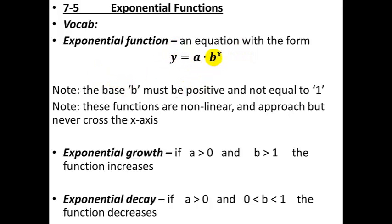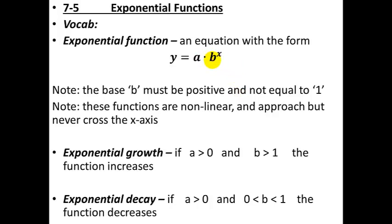b has to be positive and not equal to 1. So these are nonlinear functions, and they approach but never cross the x-axis. Your function will be increasing or growing any time your a value is positive and your b value is larger than 1. And there'll be exponential decay or decreasing in size any time your coefficient is positive but your b value is a fraction — less than 1, somewhere between 0 and 1.